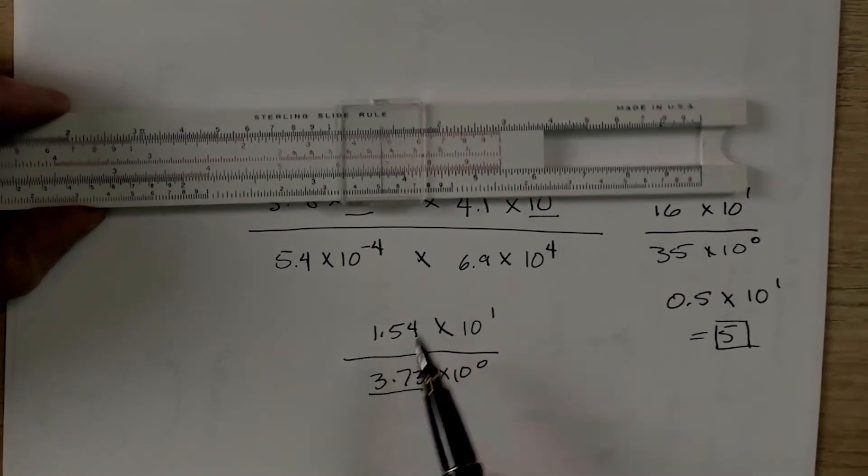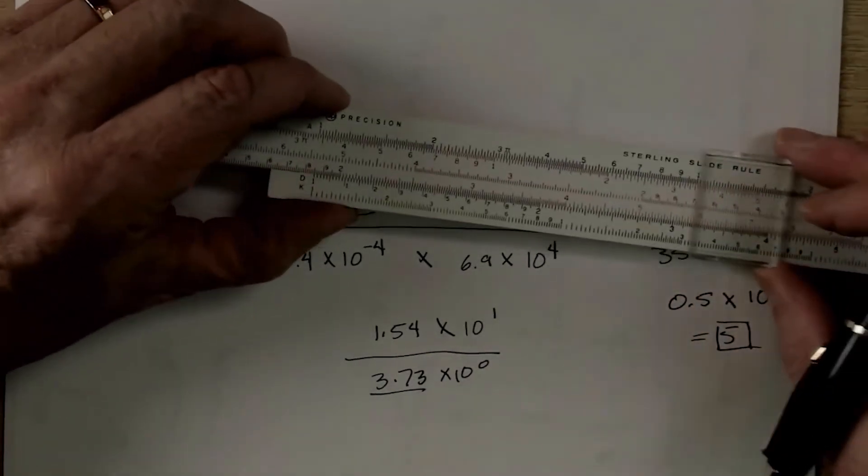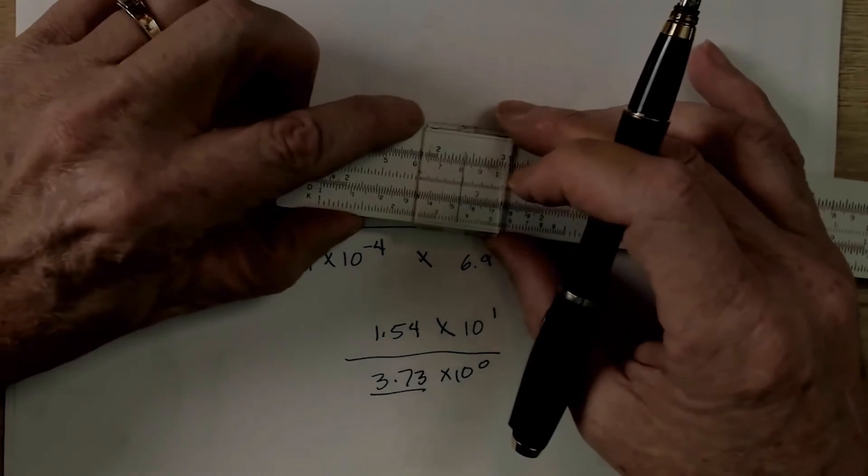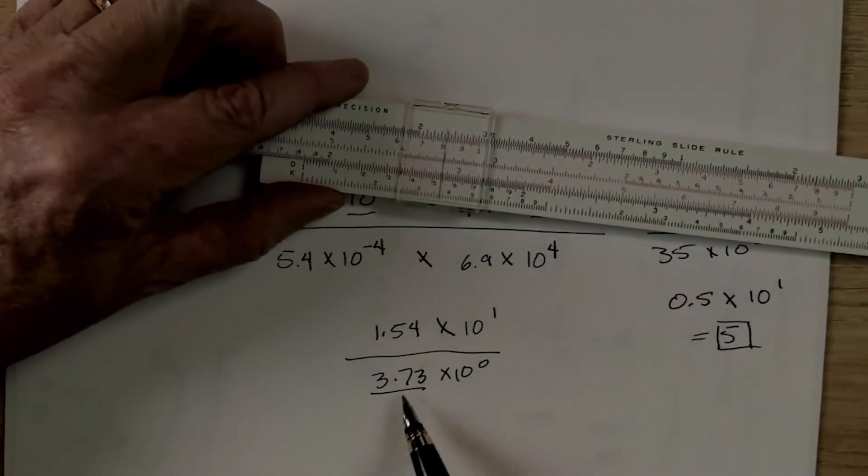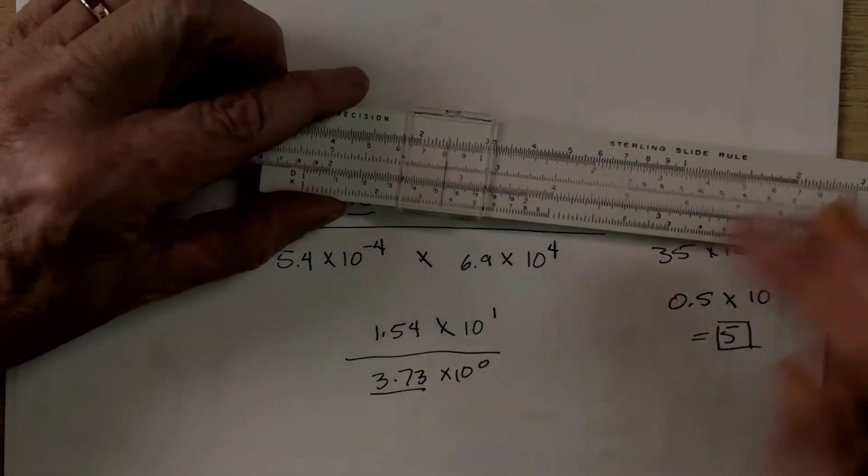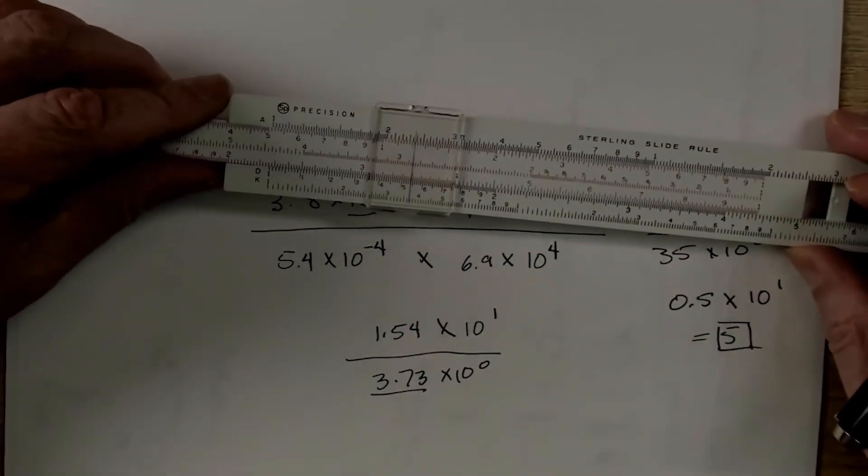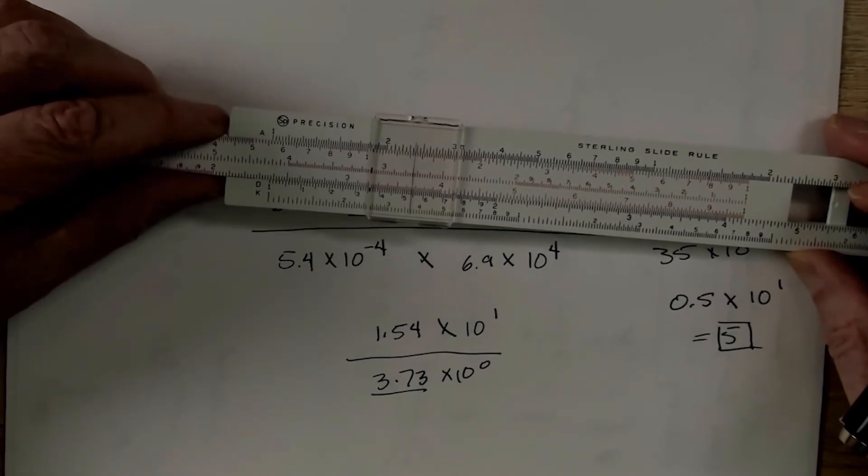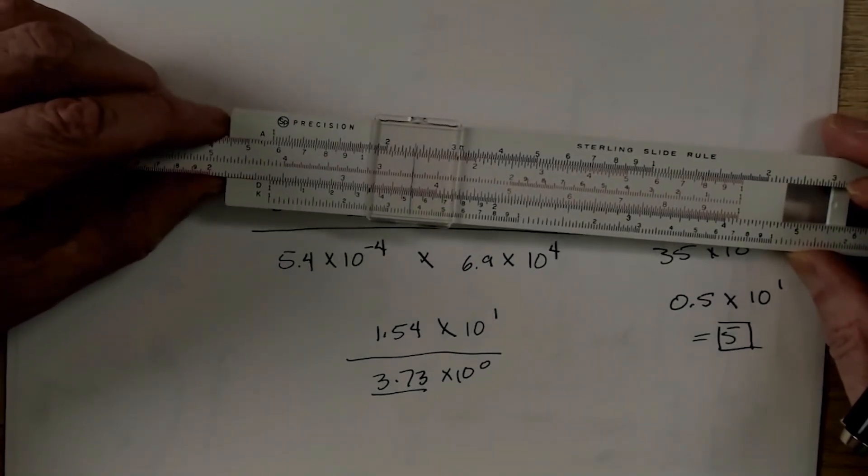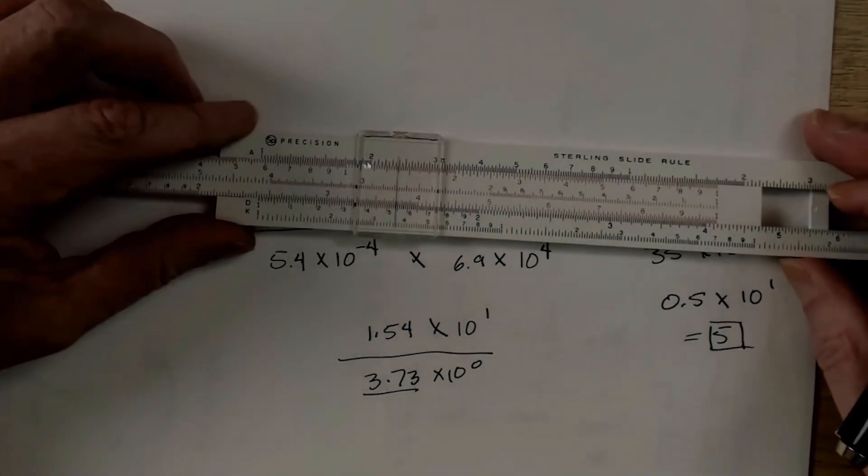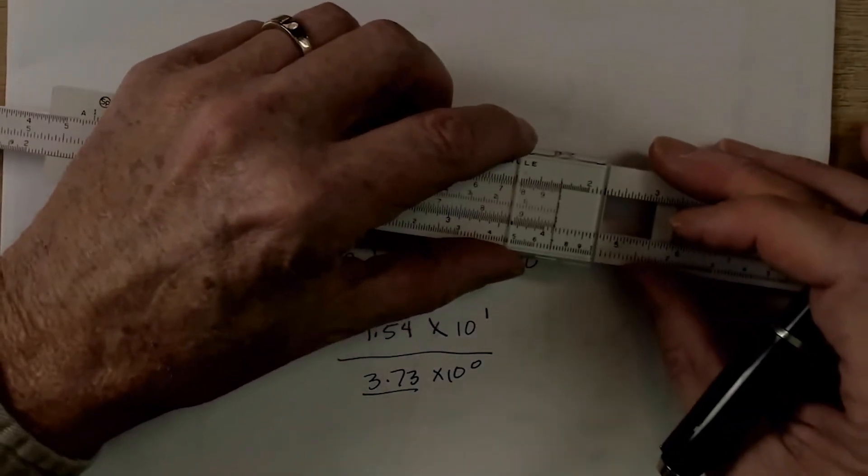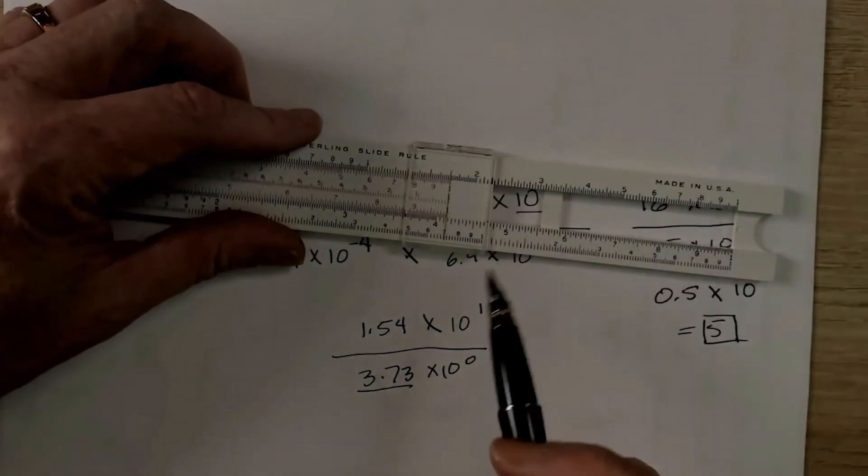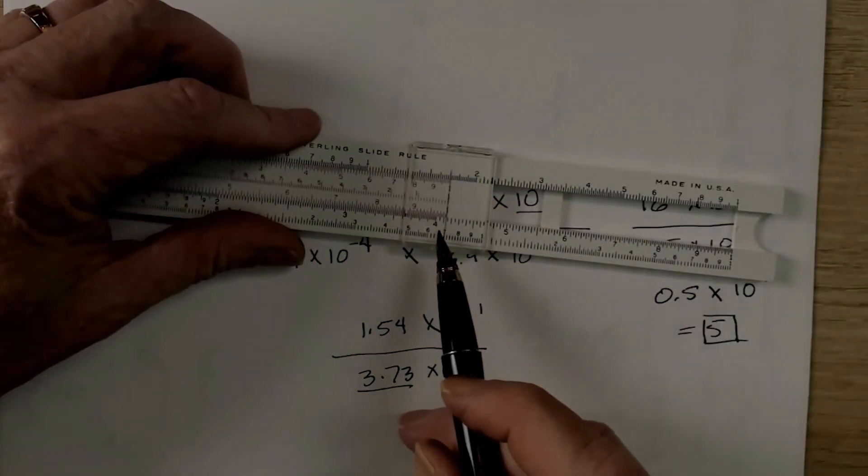Now, all we have to do is we have to take our 1.54, which is right here. We have to divide it by 3.73, which means that we need to put that number over the number we're doing something to. So, there's 3.7. And there's about 3.73. And it's going to come out to our answer right here under the index. And we're going to get an answer of about 4.13.